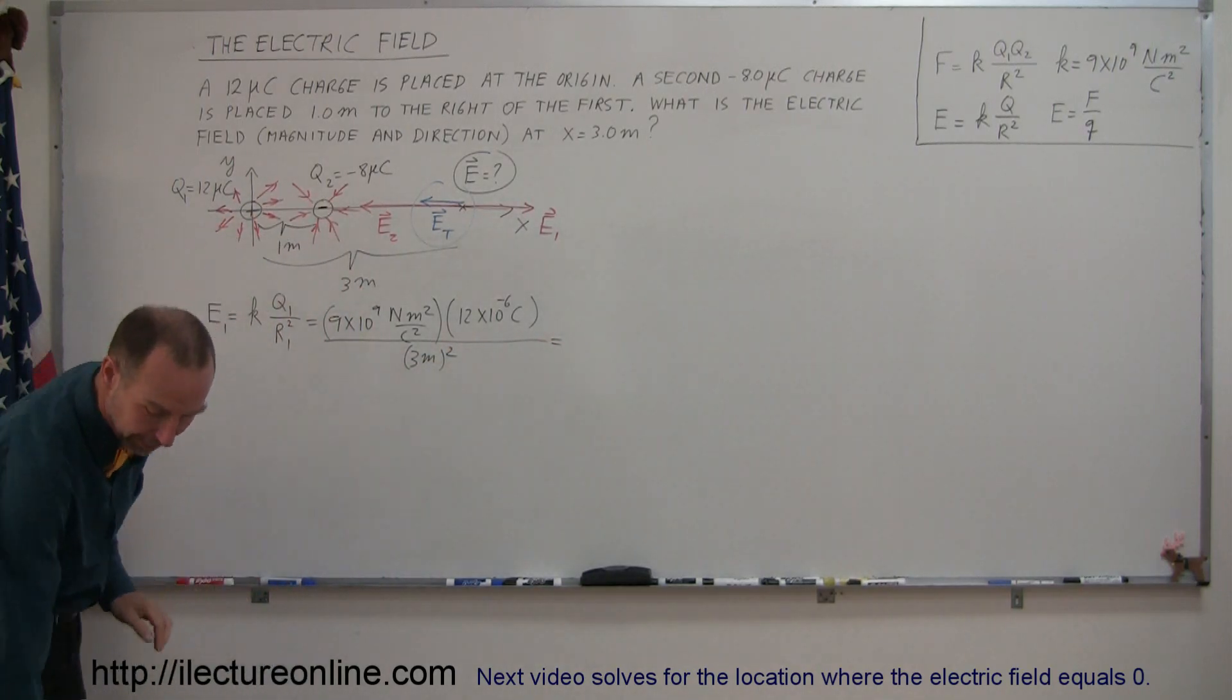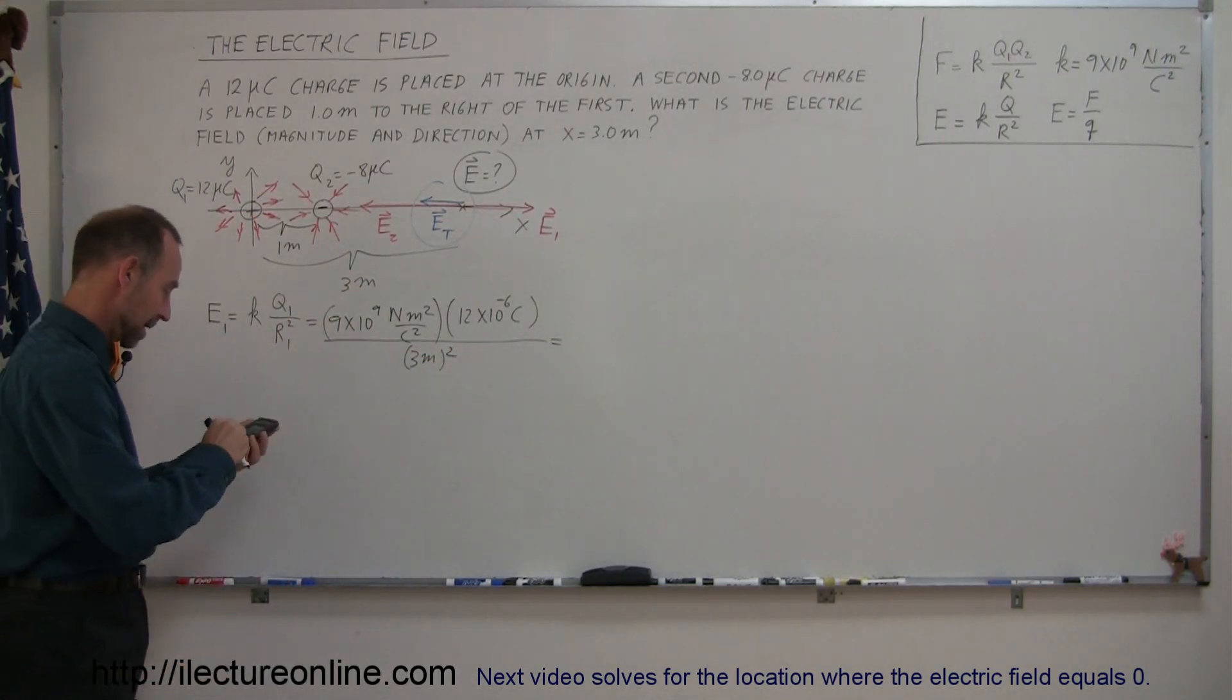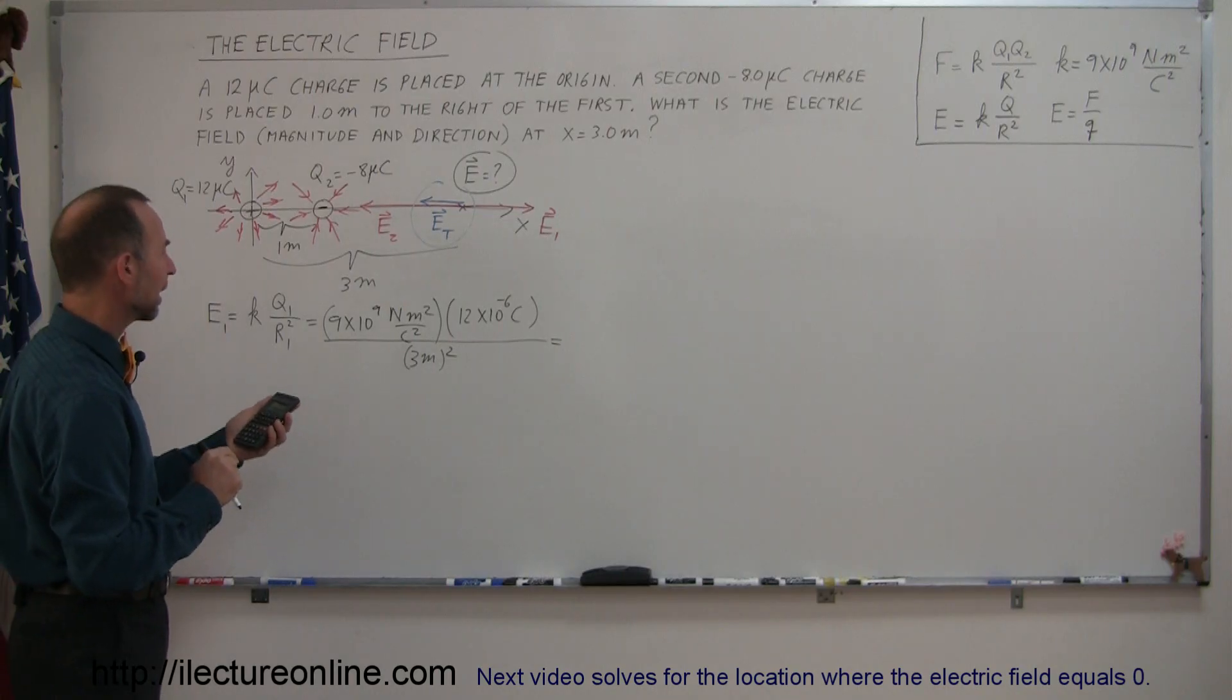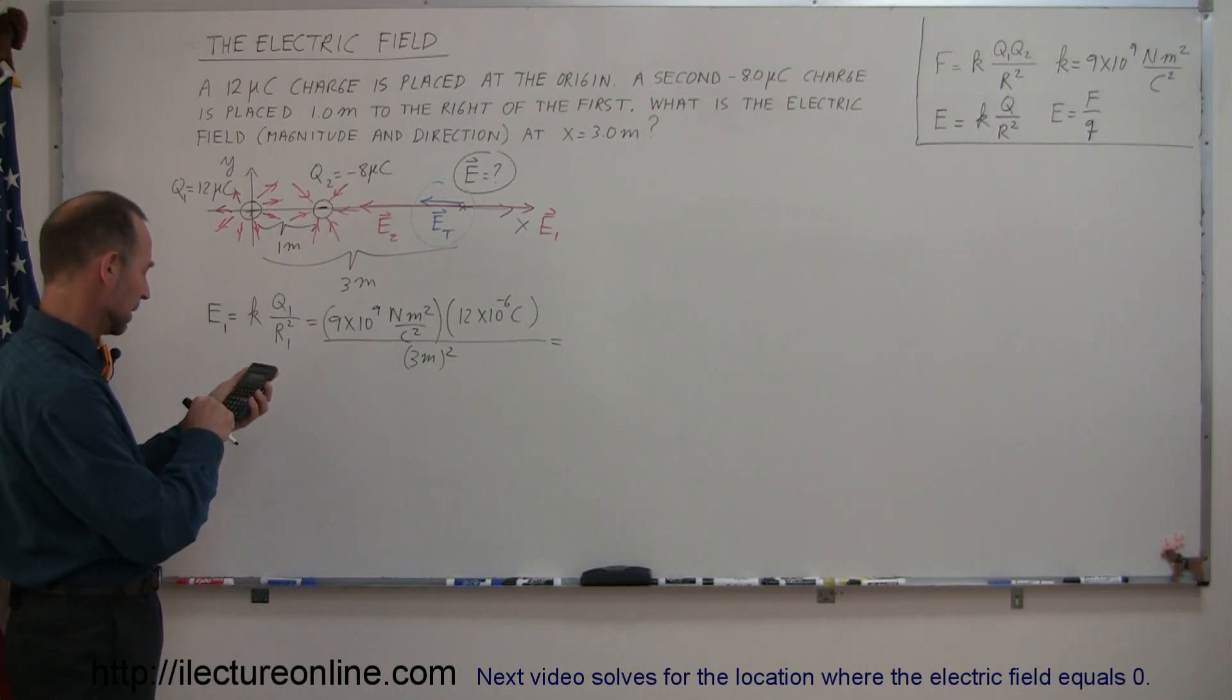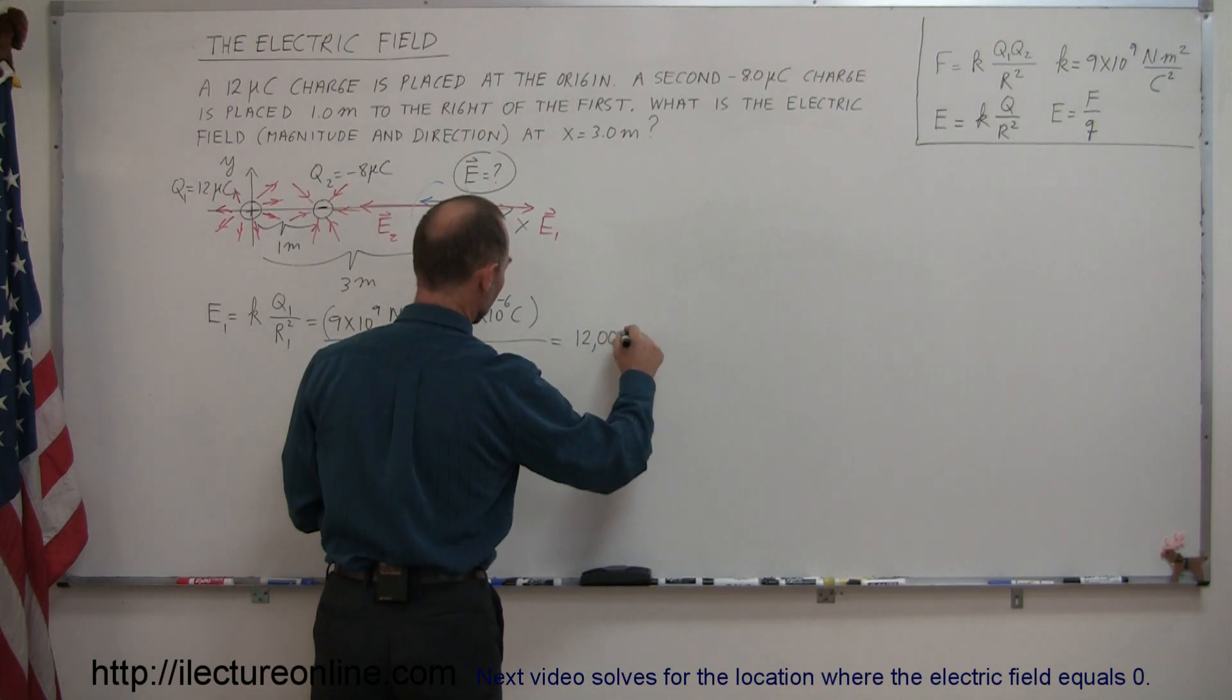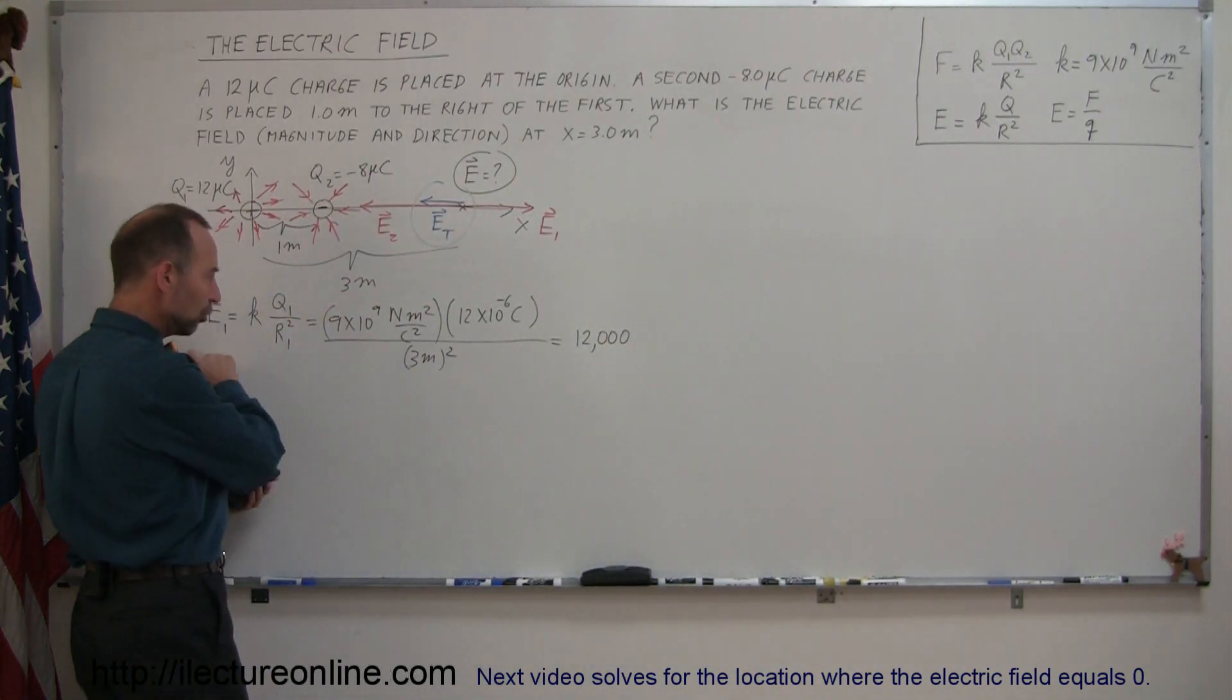Now we grab a calculator to see what that equals. So we have 9 E to the 9 times 12 exponent 6 minus, and now we divide that by 9. Let's see, 9 E to the 9 times 12 E to the minus 6 equals, and then divide that by 9. There, that's more like it.